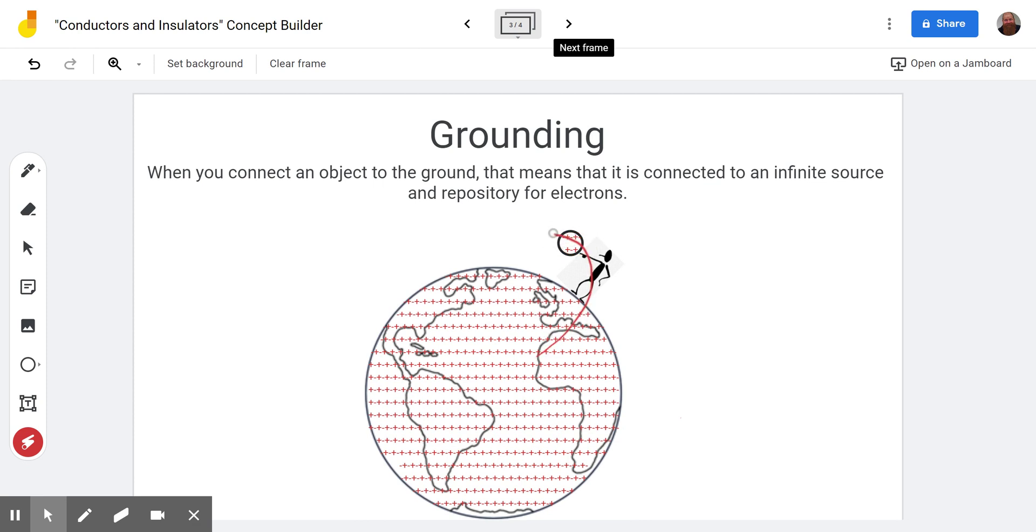In other words, if we touched a positive thing here, these electrons could flow in here and the electrons are all repelling each other, so they're going to spread out in this whole system. Now because this is so huge, essentially that means we're going to be able to make this thing neutral.